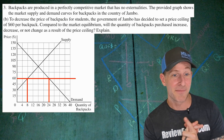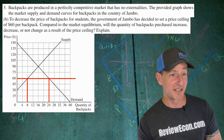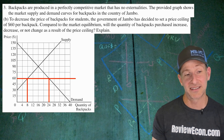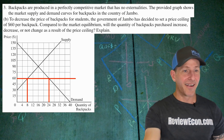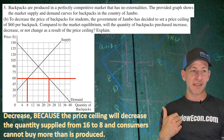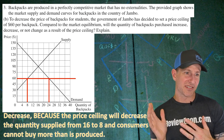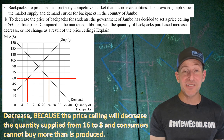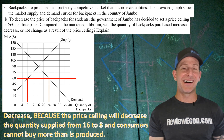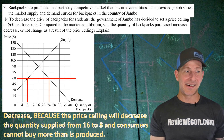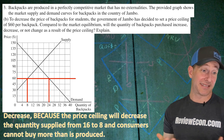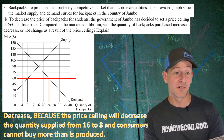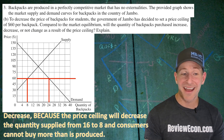The government of Jonbo has decided to set a price ceiling of $60 per backpack. Will the quantity of backpacks purchased increase, decrease, or not change? The answer is decrease. At $60, the quantity demanded is 24, but only eight are being produced, and you can't buy more than people are willing to produce at that low price. The price ceiling decreases the quantity supplied from 16 to 8, and consumers cannot buy more than is produced.